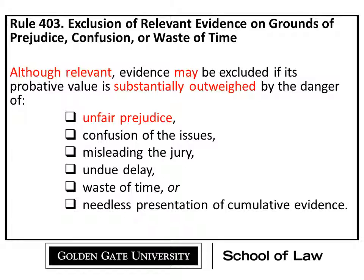Most evidence is relevant and it's going to come in. Only in certain instances — only when one of these dangers, most notably unfair prejudice, substantially outweighs the probative value of the evidence — will we keep it out. So this is a rule of inclusion. We expect most evidence to stay in. Only the rare instances where one of these dangers substantially outweighs that probative value will the court exercise its discretion.